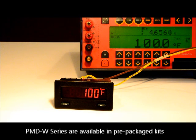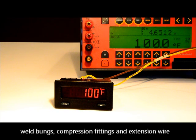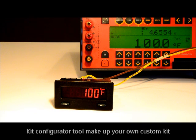The Superlite W series meter is available in pre-packaged kits that include pre-selected EGT probes and accessories like weld bungs, compression fittings, and extension wire. If one of the kits doesn't have what you want, our website also has a kit configurator tool so you can make up your own custom kit.